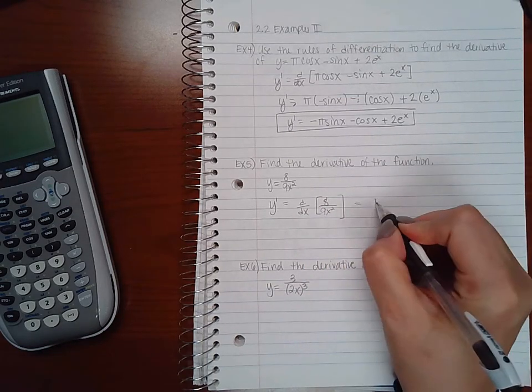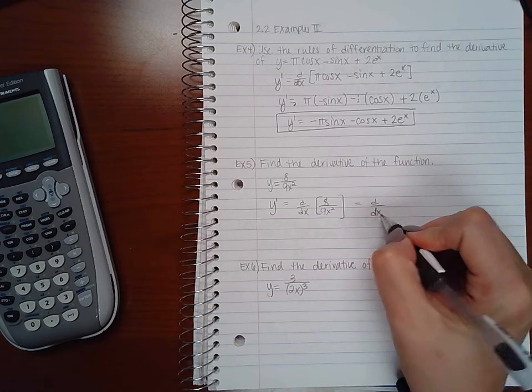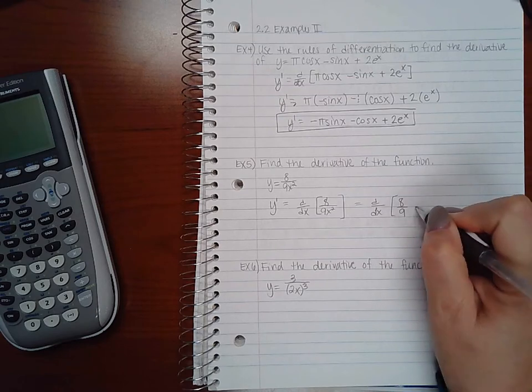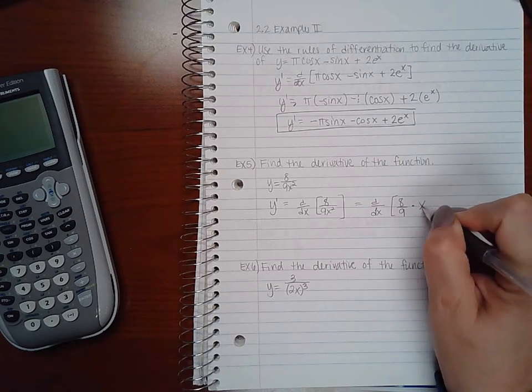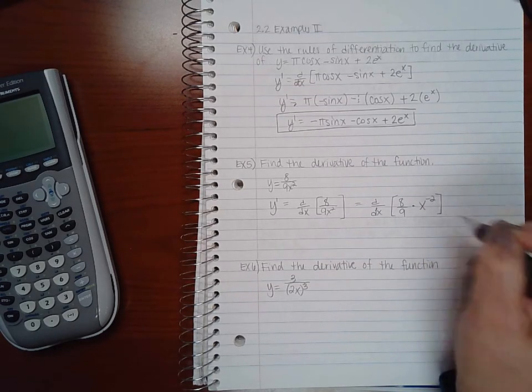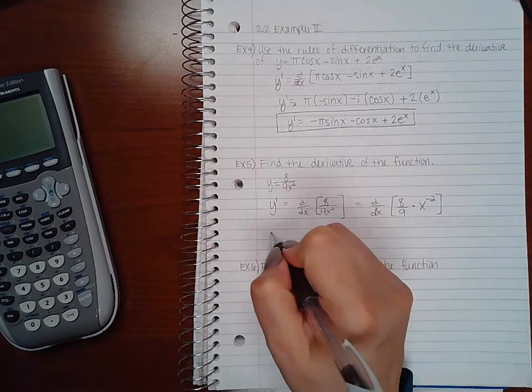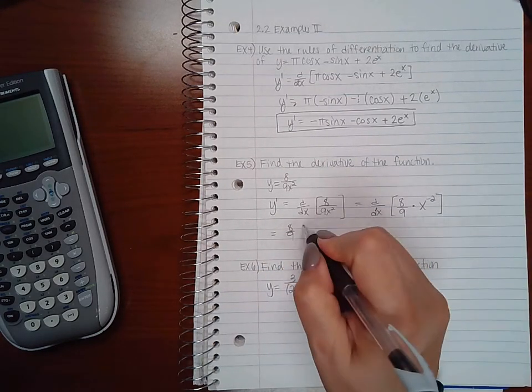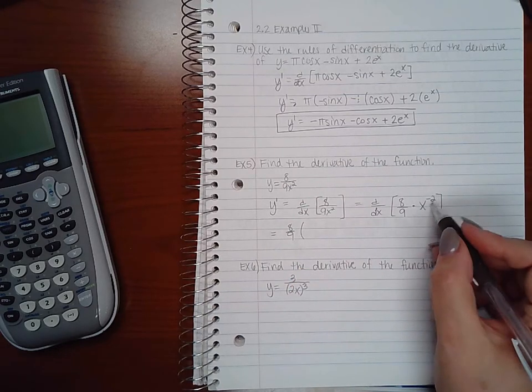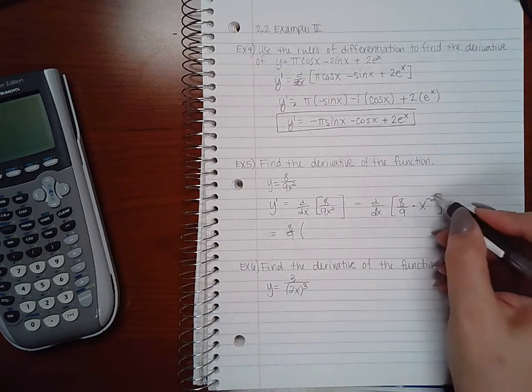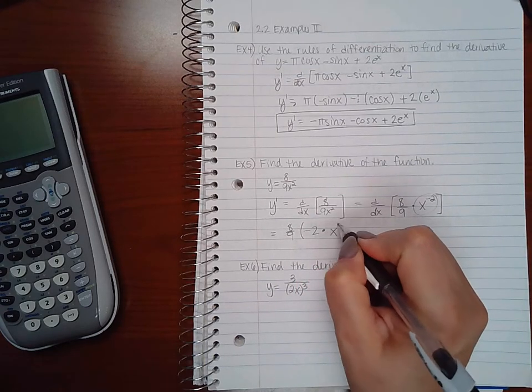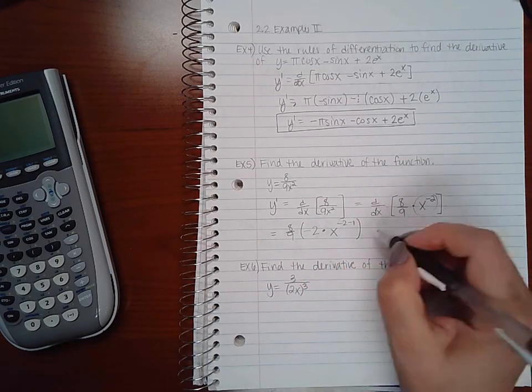I'm going to rewrite this so that the fraction with x is written as a negative exponent. Then I'll use the constant multiplier rule and the power rule for this expression. Bring down the power times x, and then decrease the power by 1.